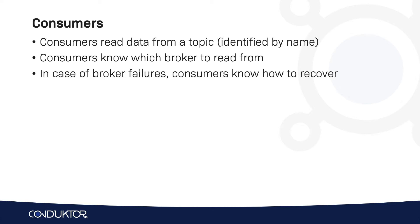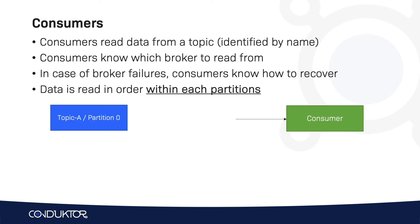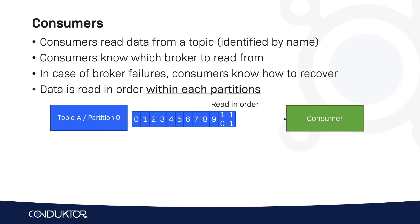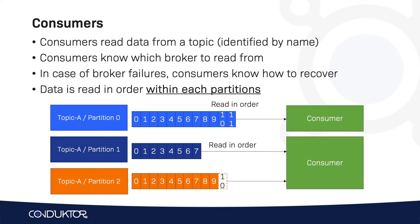Now data for the consumers is going to be read in order within each partition. So if we look at a consumer consuming from topic A, partition 0, then it will first read message 0, then 1, then 2, then 3, all the way up to message 11. If another consumer is reading from two partitions — for example, partition 1 and partition 2 — it's going to read both partitions in order.